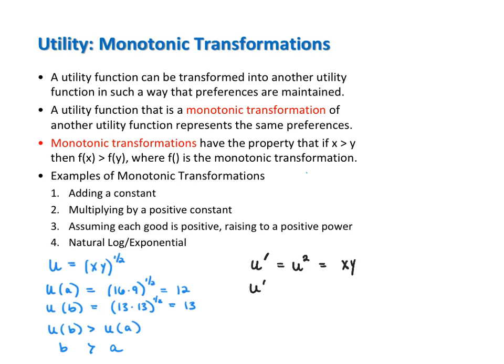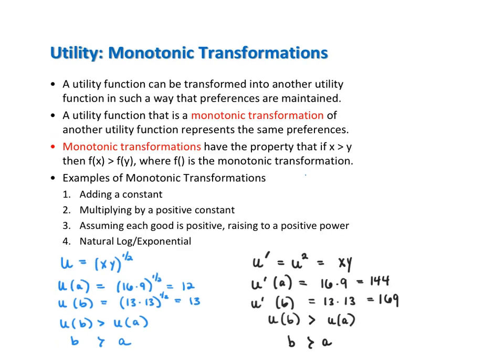Using the same bundle A and bundle B now gives us the utility from bundle A equals 144 and the utility from bundle B now equals 169. Even though these numbers are different, what's the same is that bundle B gives more utils than bundle A. And so we can conclude that B is strictly preferred to A.